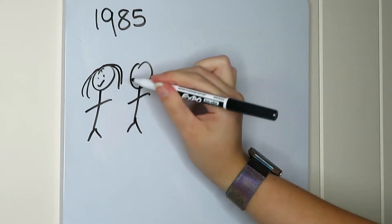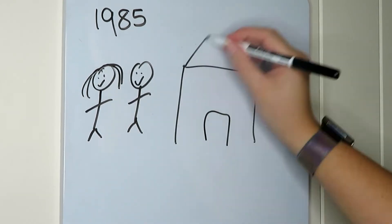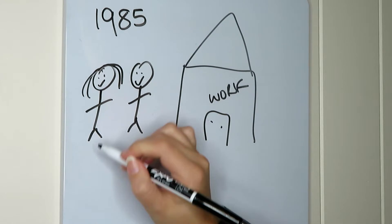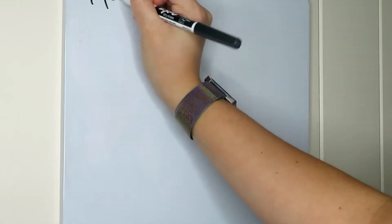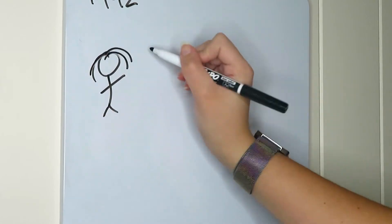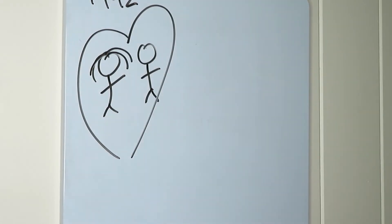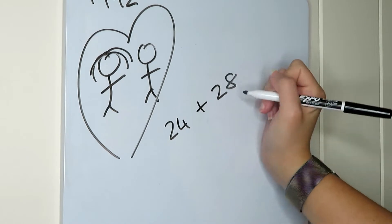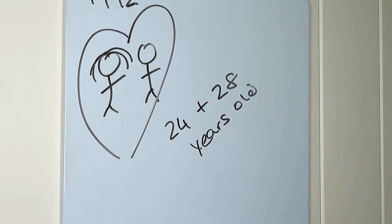It all started in 1985 when my parents met. They worked together, my dad was 17 and my mom was 21. They didn't start dating until about 1992 when they were 24 and 28 because my mum thought my dad was way too young for her.